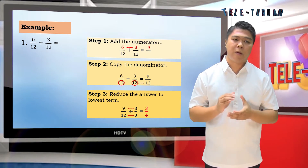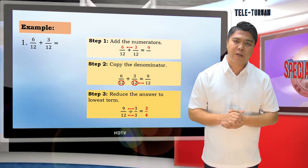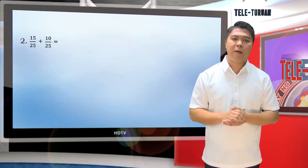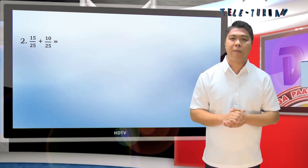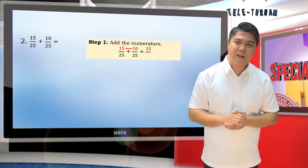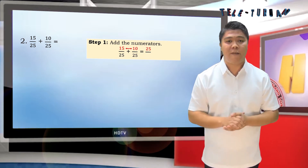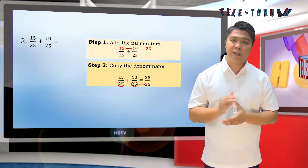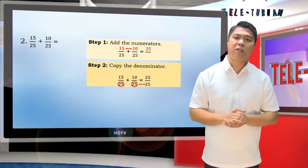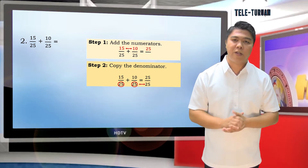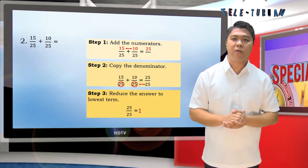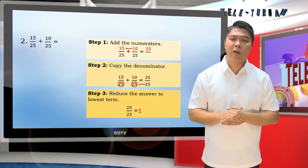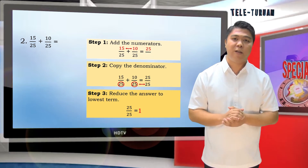6 twelfths plus 3 twelfths is equal to 3 fourths. Let's have another example: 15 over 25 plus 10 over 25. Step 1: add the numerators — 15 plus 10 is 25. Step 2: copy the denominator — their denominator is 25 — that gives us 25 over 25. Step 3: reduce the answer to lowest term. When the numerator and the denominator are equal, the fraction is equal to 1.